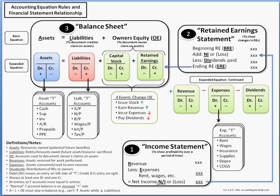We use net income to build the retained earnings statement, which shows changes in retained earnings over an accounting period. We start with beginning retained earnings, add net income from the income statement, and subtract any dividends paid out — that gives us ending retained earnings.